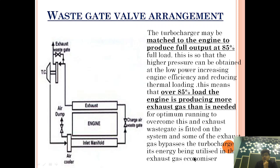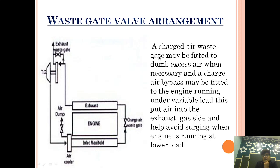A charge air waste gate may be fitted to dump excess air when necessary, and a charge air bypass may be fitted for the engine running under variable load. This puts air into the exhaust gas side and helps avoid surging when the engine is running at low load. If excess air is present in the manifold, it can be dumped when the engine is running at full load.